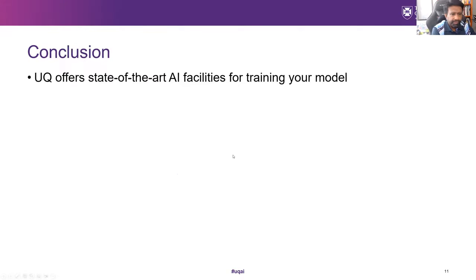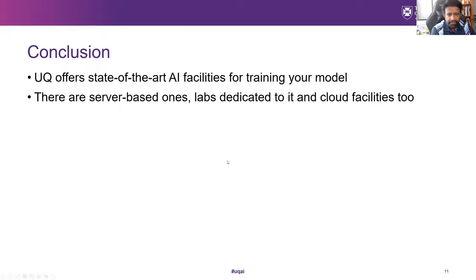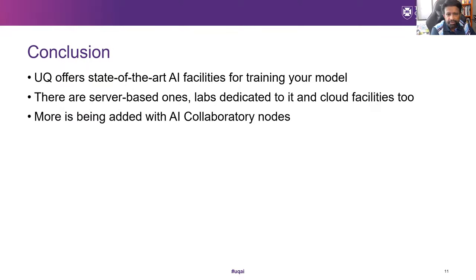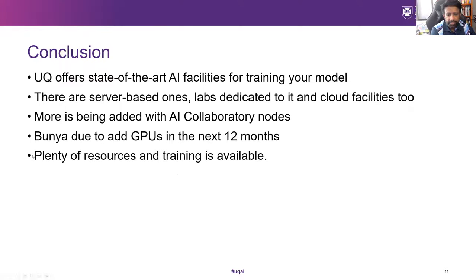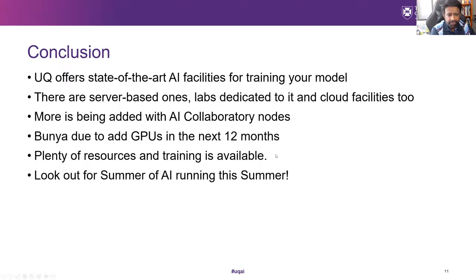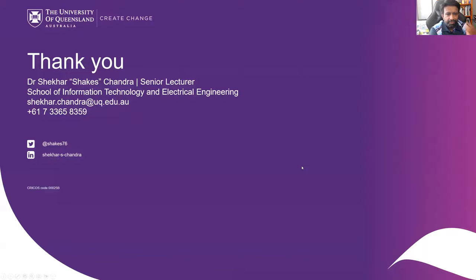In conclusion, we've got a lot of state-of-the-art AI facilities — mostly server-based ones. We've added some new ones, and Bunya, UQ's big new initiative, is adding more GPUs in the next 12 months. Plenty of resources and training is available — we're running the Summer of AI right now. I will stop there and pass it on to CU. Before I do, are there any questions?